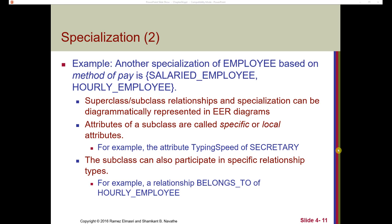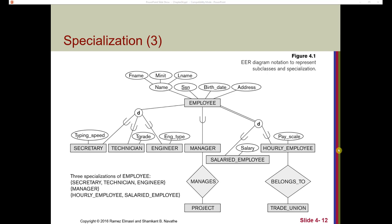Attributes of a subclass that are not in the superclass are called specific or local attributes. For example, the attribute typing speed of the secretary subclass. A subclass can also participate in specific relationship types — for example, the relationship 'belongs to' of hourly employee. While employee doesn't belong to a trade union, hourly employee does have that relationship 'belongs to trade union.' So you can have relationships off of subclasses that don't pertain to the superclass.